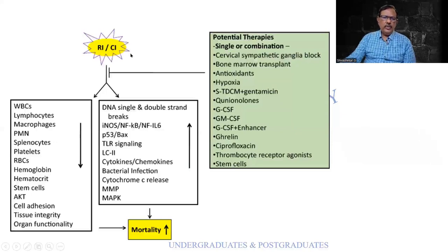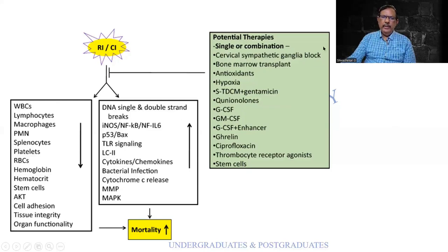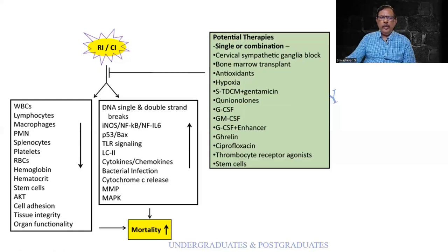Radiation injury affects various cells — starting from WBCs up to stem cells as well as various organs — and also internal structures and signaling pathways. Both can lead to increased mortality. Potential therapies that can block this include cell-blocking agents, antioxidants, hypoxia modifiers, various forms of chemotherapy, and colony-stimulating factors. Paradoxically, sometimes the treatment itself can induce a second malignancy.